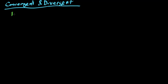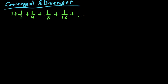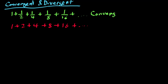Let's have a first series: one plus one-half plus one-fourth plus one-eighth plus one-sixteenth, and so on. Our second series is: one plus two plus four plus eight plus sixteen, and so on. You may notice there's a key difference between the two. The top series is known as a convergent series, and the bottom series is known as a divergent series.